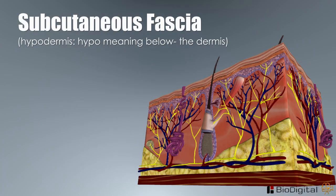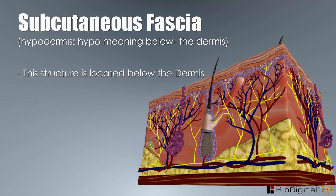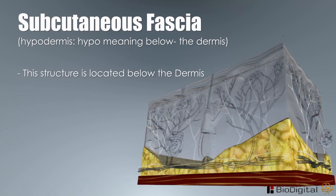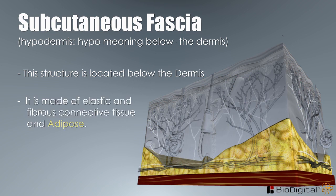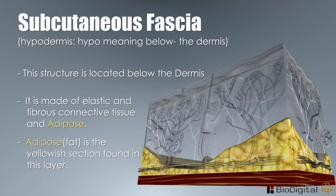The subcutaneous fascia, or hypodermis, is located below the dermis — the bottom of the innermost layer of the skin. It is made of elastic and fibrous connective tissue and adipose, which is fatty tissue. The purpose of this layer is to connect the skin to the underlying muscles. Adipose, or fat, is the yellowish section found in this layer.